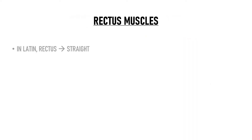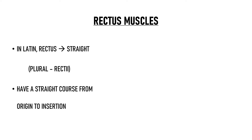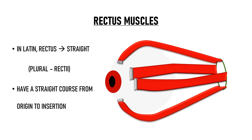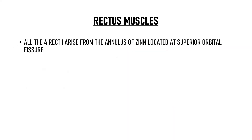We will discuss the rectus muscles first. In Latin, the word rectus means straight and the plural of rectus is recti. These muscles have a straight course from their origin to their insertion. All 4 rectus muscles arise from the annulus of Zinn which is located at the superior orbital fissure.